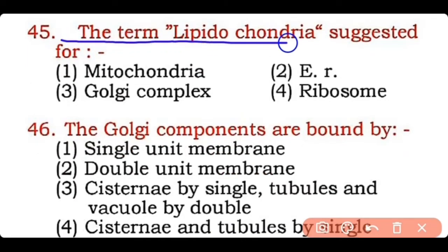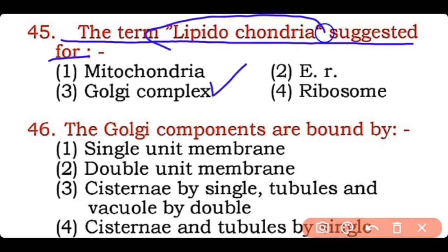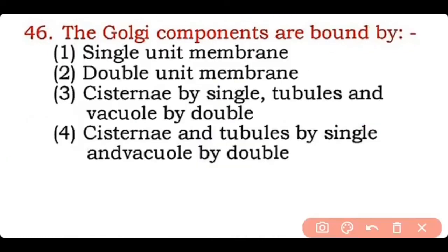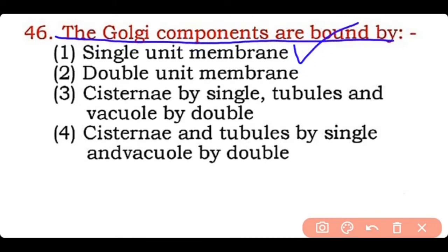Question 45: The term 'lipidochondria' was suggested for — mitochondria, endoplasmic reticulum, Golgi complex, or ribosome? Correct answer is option three — the term lipidochondria is mostly used for the Golgi complex. Question 46: Golgi components are bound by a single unit membrane — correct answer is option one.